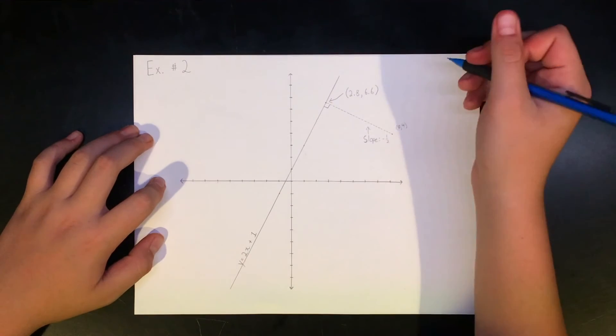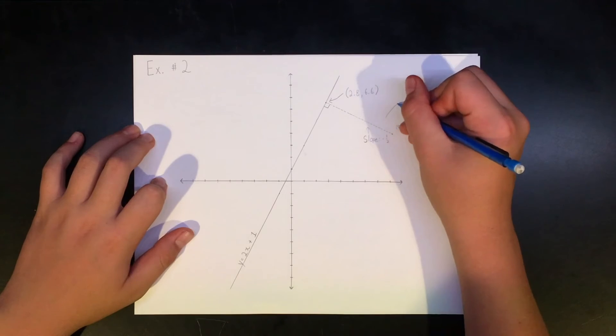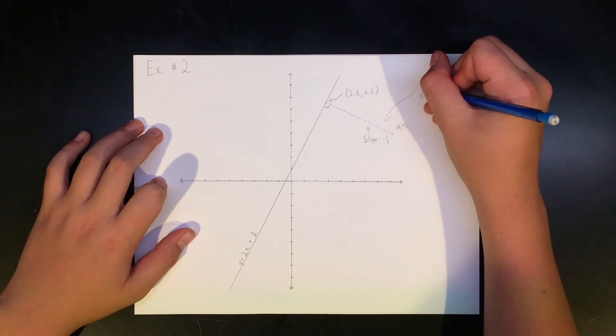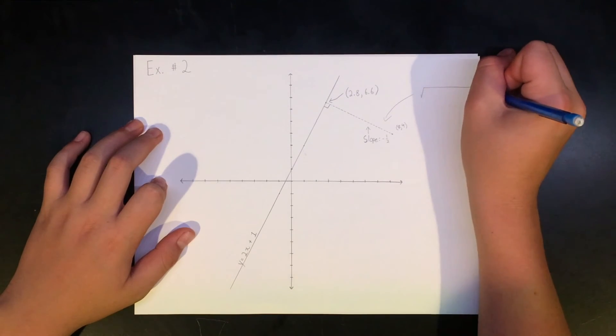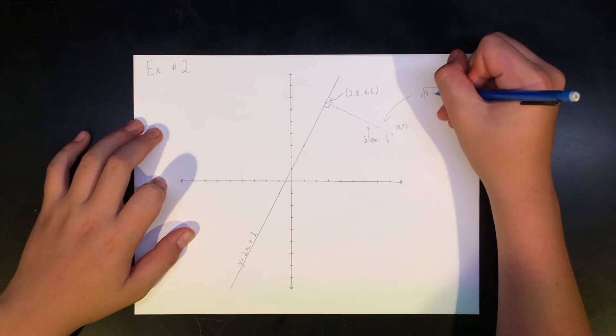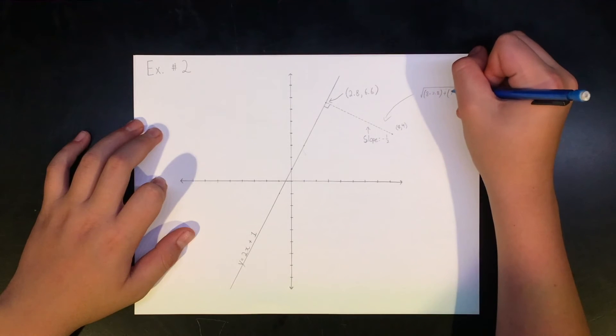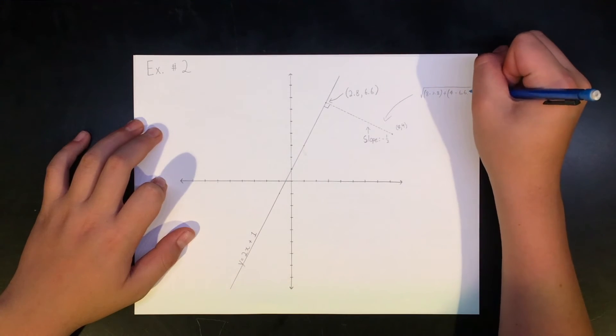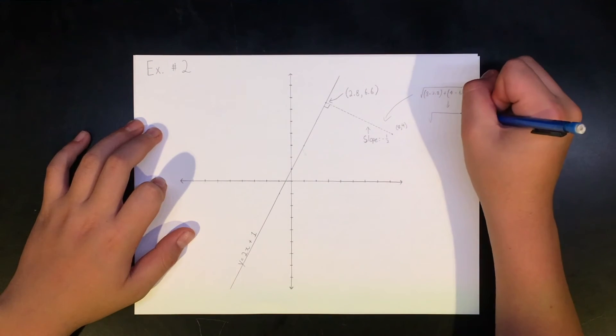Since the slope of the first equation is 2x, we would use the negative reciprocal to get negative 1 half x. This slope would then be drawn from the point to be drawn to the line and find the intersecting point. After the intersecting point is found, we can then use distance formula to find the shortest distance from the point to the line.